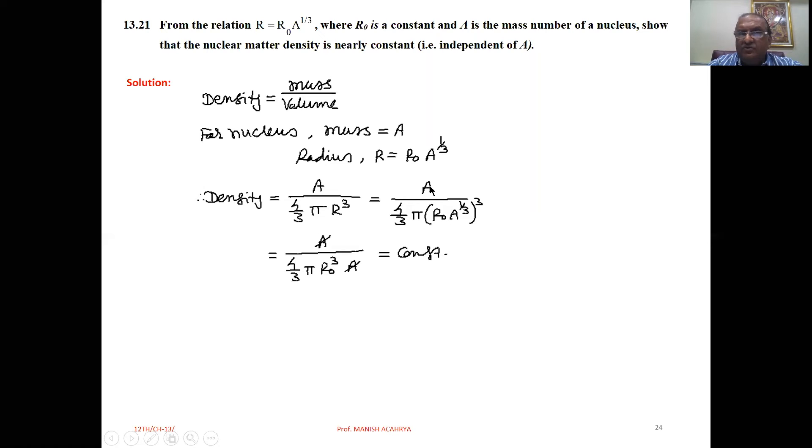That is equal to a upon 4 by 3 pi r cube. r is r0 into a raised to one third, but here r is cubed, so take the cube of this. a raised to one third raised to cube, that is a.